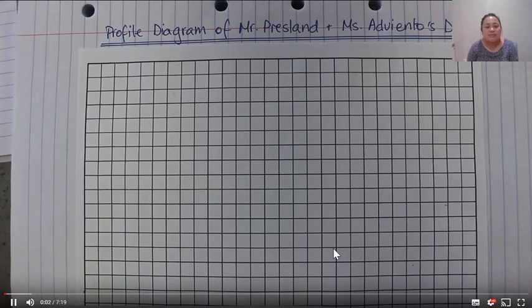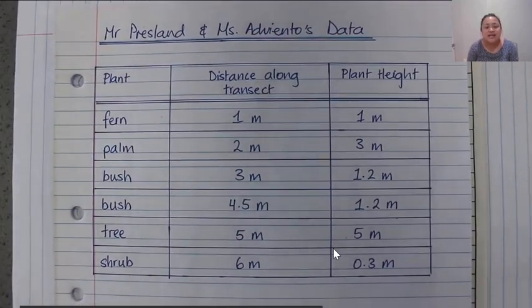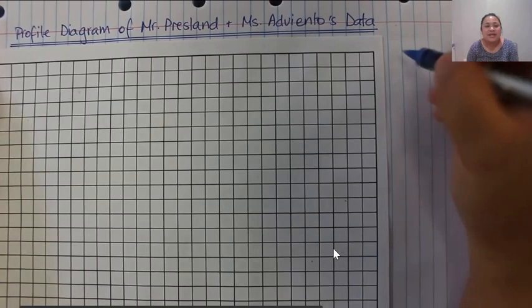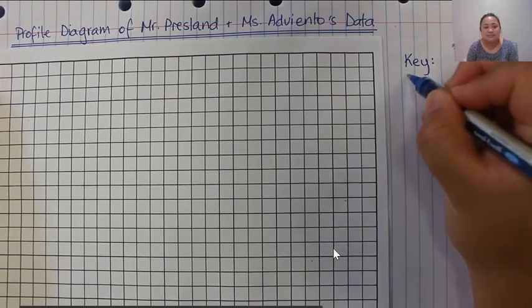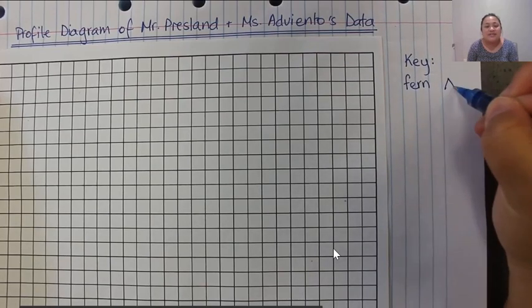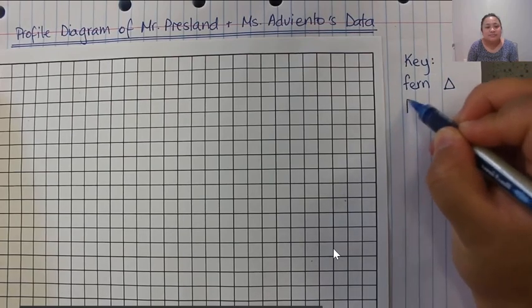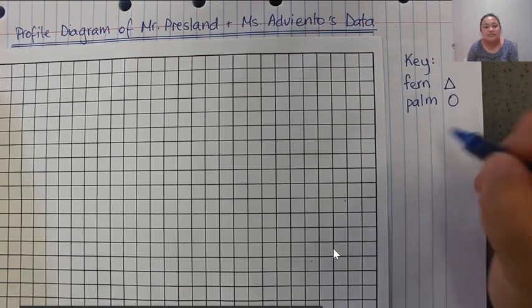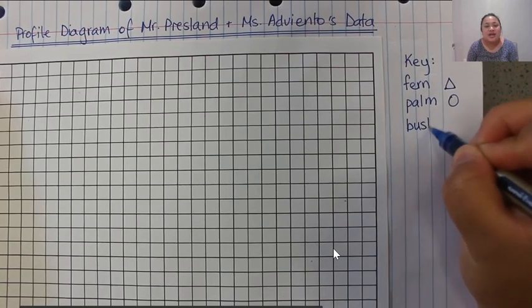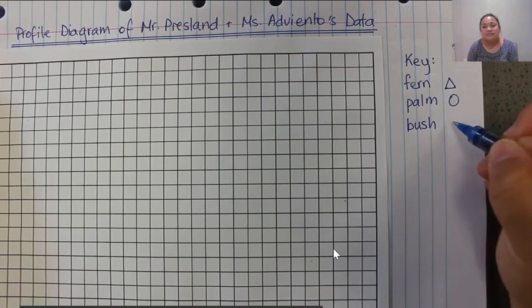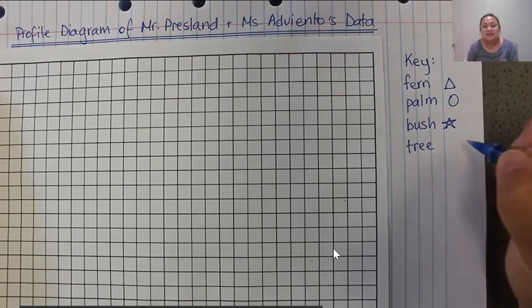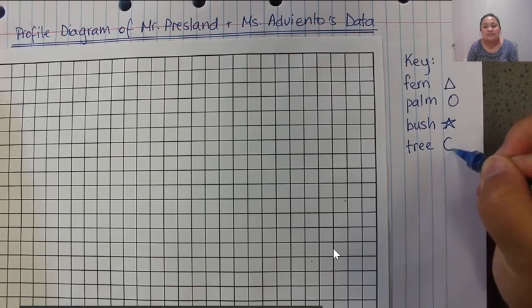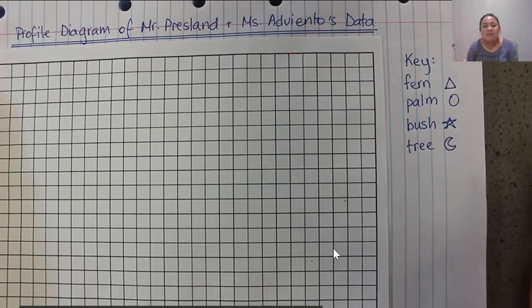Here's a video of me showing how to draw this profile diagram. Here's the graph paper I'll draw my profile diagram on, and this was the table that Mr. Preslin and I collected data on. The first thing I'm going to do is allocate a symbol for each plant species and draw a key. For the fern I've decided to use a triangle, for the palm a circle, for the bush a star, for the tree a crescent, and for the shrub a square.